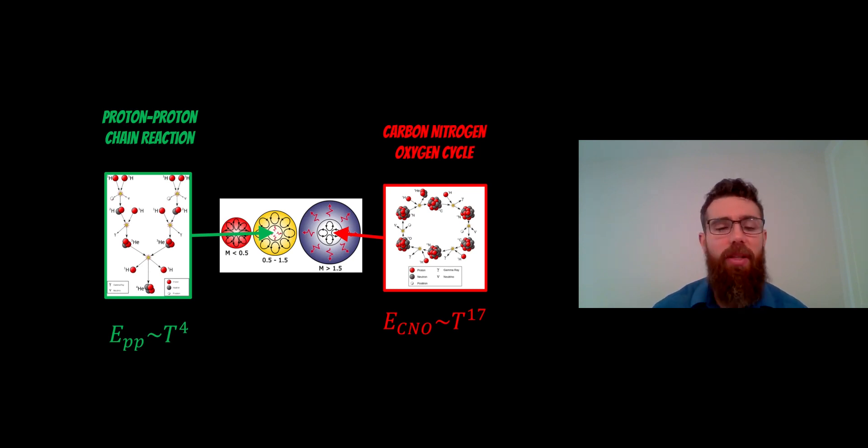So they're transporting it convectively. And that's because they're dominated by the carbon-nitrogen-oxygen cycle. Because they're a larger, more massive star, the gravitational forces are able to generate higher temperatures in the central core. This then means the dominant mechanism for generating energy is through the carbon-nitrogen-oxygen cycle. Now that energy production, as a function of temperature, is a lot more sensitive to temperature. And it's basically to the 17th power of the temperature. So as you increase the temperature, the energy produced increases a lot more than the proton-proton chain reaction.